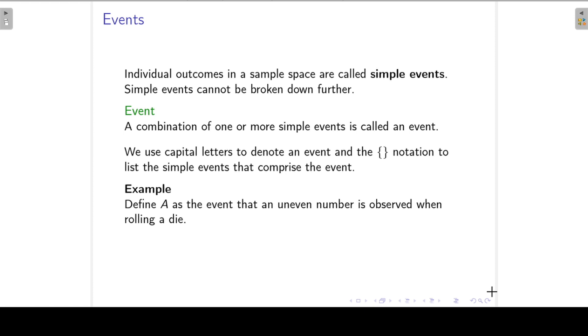Individual outcomes in a sample space are called the simple events. Simple events cannot be broken down any further. However, we can find a combination of one or more simple events and then we call that an event. The notation that we use is we use a capital letter to denote an event and the curly bracket notation to list the simple events that comprise this event.